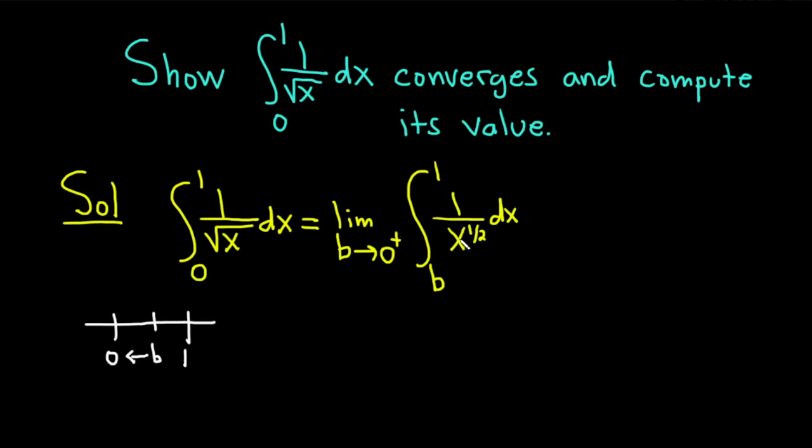All right. So now we can rewrite this in a way that will allow us to integrate. So I'm going to go ahead and bring this x to the 1 half upstairs. So this is going to be equal to the limit as b approaches 0 from the right of the integral from b to 1. And the exponent will become negative. So it will be x to the negative 1 half dx.